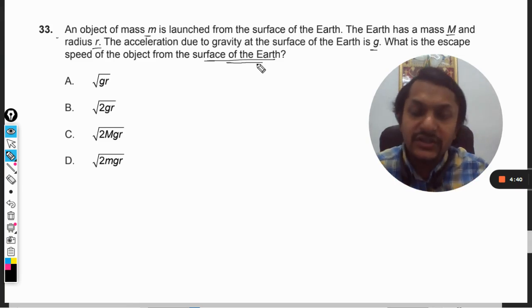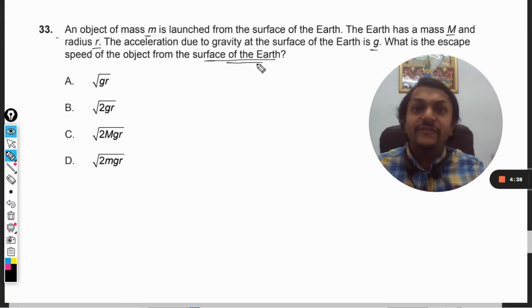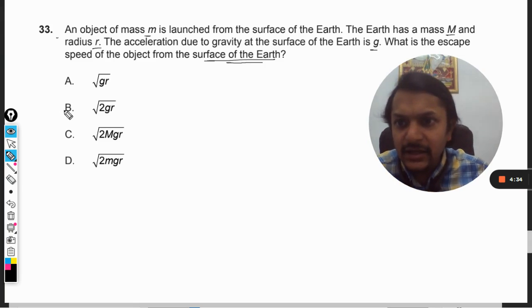My dear students, for this topic I tell you there is a straightforward formula that we can remember, and I know that the answer will come out to be root of 2gr. Root of gr is basically the orbital velocity.